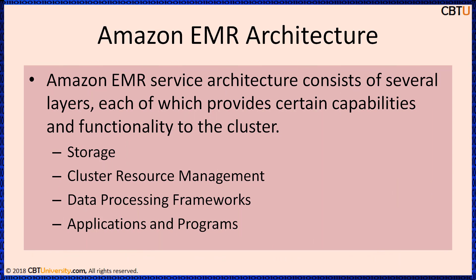Amazon EMR Service Architecture consists of several layers, each of which provides certain capabilities and functionality to the cluster. Various layers are: storage, cluster resource management, data processing frameworks, and applications and programs.